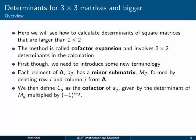So we're going to see how to calculate determinants of square matrices that are larger than 2x2 in size. The method we're going to be using is called cofactor expansion, and it actually involves 2x2 determinants in the calculation. First though, we're going to need to introduce some new terminology.